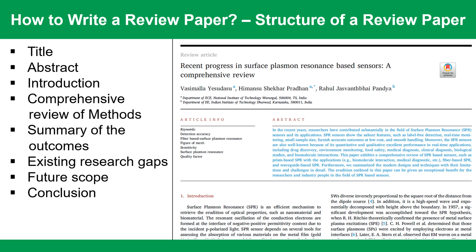Under the conclusion section, indicate the key findings. In the acknowledgement section, we can acknowledge the funding agency or anyone who supported during the presented work. In the end, present the list of references which we referred during the review. In general, a comprehensive review paper contains 200 to 300 references.